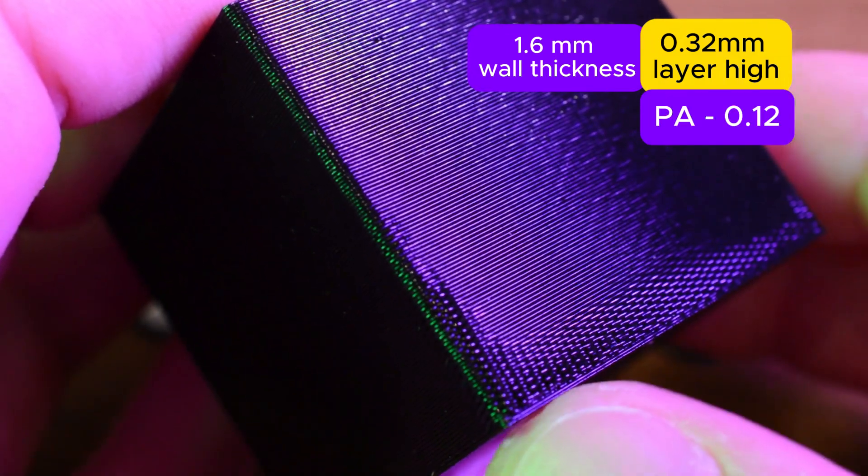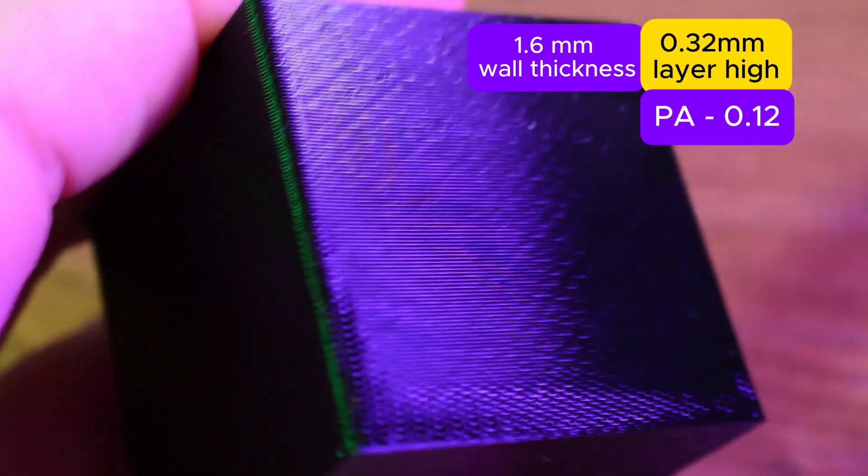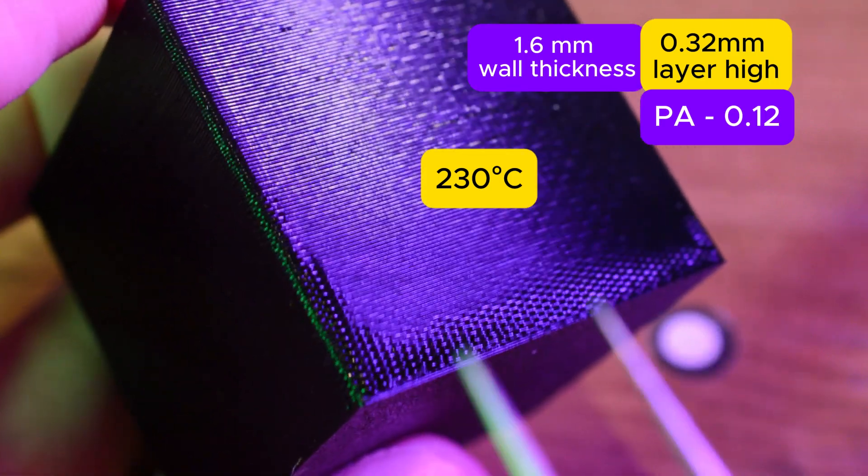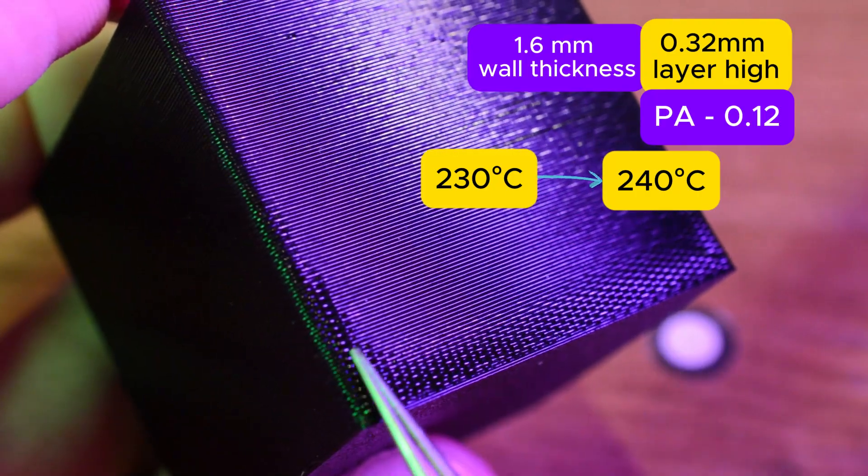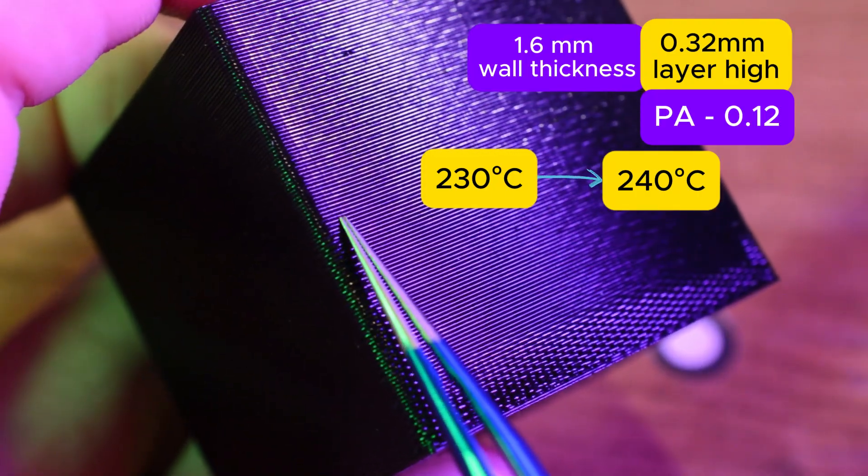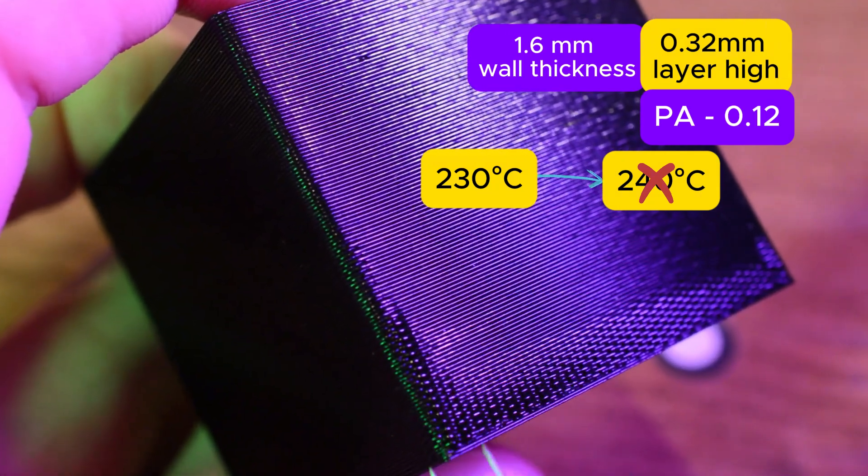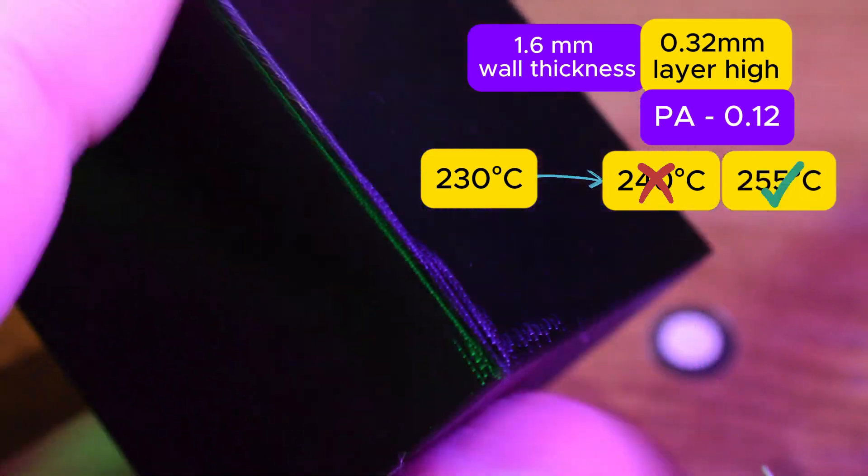It's very important to have pressure advance calibrated well, so we get nice corners. First layer was printed with 230 degrees and cooling fan off, second layer to 40 degrees and cooling fan on 100%, but I got quality issues due to low plastic temperature. So I started increasing hotend temperature during printing and the best temperature was found around 250-260 degrees.